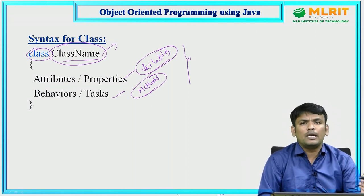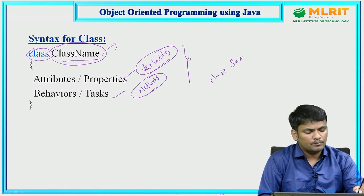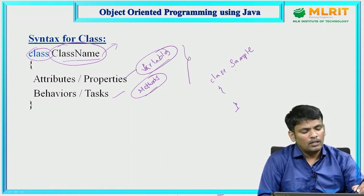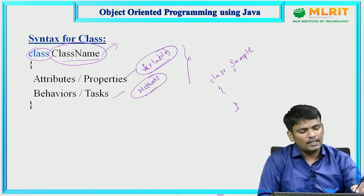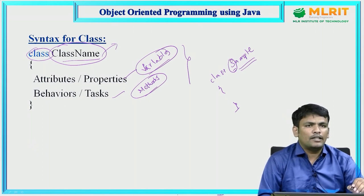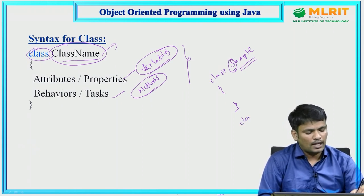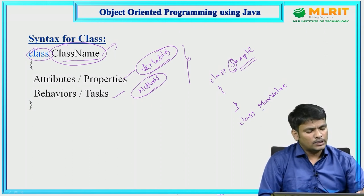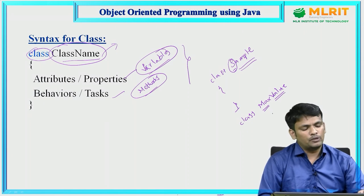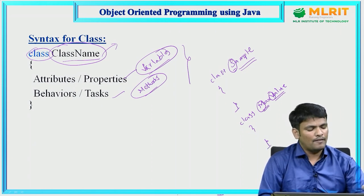For class naming conventions, the class name must start with a capital letter. For example, class 'Sample' — S must be capital. For multi-word class names like 'MaxValue', every word's starting letter must be capital: M and V. The class name must be a valid identifier — it cannot start with a digit (e.g., '123sample' is invalid). Allowed special characters are underscore and dollar sign; spaces are not allowed.